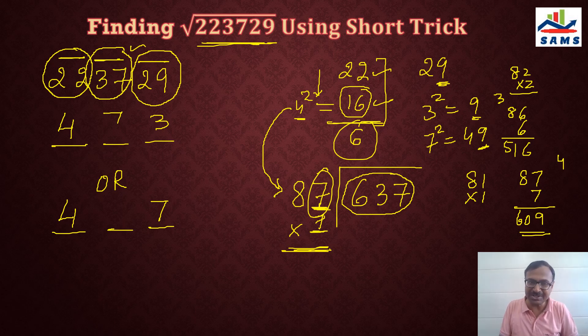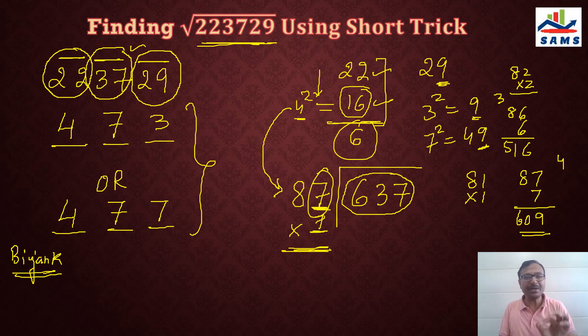Now, which one is the correct option? There are two different methods through which we can get to our final answer, whether it is 473 or 477. The Vedic Maths comes to our rescue here - the Bijank, that means the digit sum. Bijank is a single digit for any number.